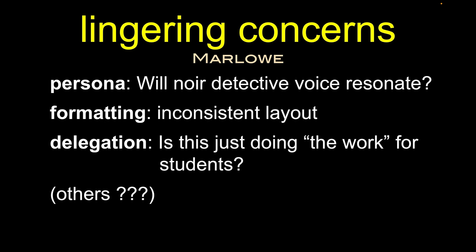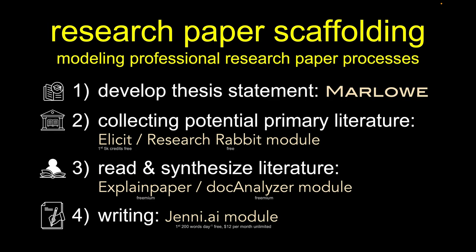There may well be many other concerns we'll discover in the coming weeks. This is in the context of a larger research paper scaffolding process module. The general idea would be this Marlowe tool to help develop a thesis statement, then show students how to use tools like Research Rabbit or Elicit to select primary literature, then some first stabs with something like Doc Analyzer or Explain Paper in terms of synthesizing and pulling content from those papers, and then doing some initial drafting. Again, this is not meant to do the work for them — it's meant to show naive students with very little experience doing research papers how to do this. Maybe they use some of these tools on their own after this module; regardless, they should have a clear path and clear expectation of all the steps involved in doing a research paper.